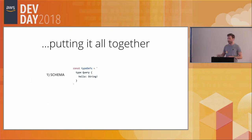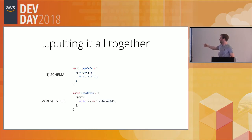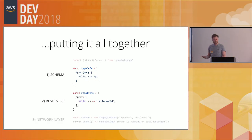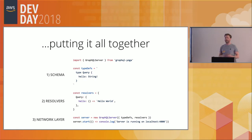Putting it all together in a server.js or index.js file: you define the GraphQL schema as a JavaScript string, the resolvers object, and the network layer by importing the GraphQLServer class from graphql-yoga, instantiating it with the schema and resolvers, and starting the server. From that point you can send GraphQL queries to localhost:4000.